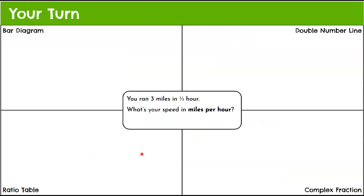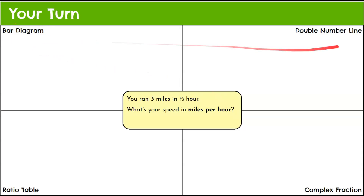Now it's your turn. Here's your real-world problem: you ran three miles in one-third of an hour — what is your speed in miles per hour? Please pause the video and complete the graphic organizer using all four methods: a bar diagram, a double number line, a ratio table, and a complex fraction. Take your time, pause, and then come back to see my work. Good luck.